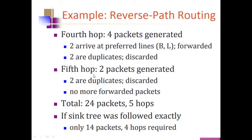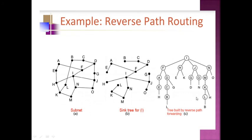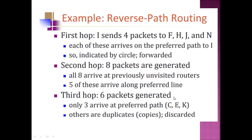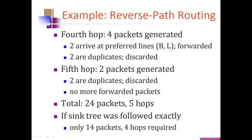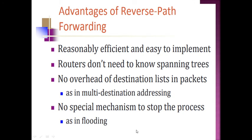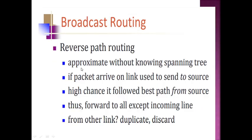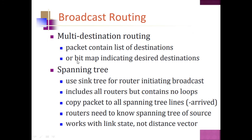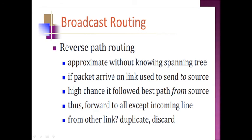In the fifth hop, 2 packets are generated — B and L. In total, 24 packets are generated across 5 hops. If the sink tree were followed exactly, only 14 packets across 4 hops would be required. The advantage of reverse path forwarding is that it is reasonably efficient and easy to implement. Routers do not need to know spanning trees, there is no overhead destination list in packets as in multi-destination addressing, and no special mechanism is needed to stop the process as in flooding.